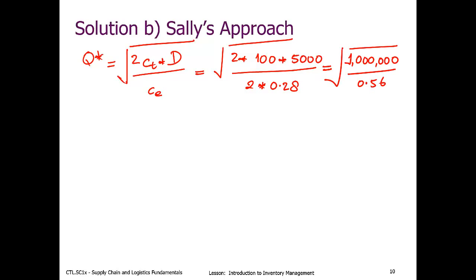And if you solve this, you'll get a value of 1,336 units. So now that we have our EOQ number, the unit of 1,336, let's try and calculate the total cost using this EOQ.